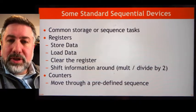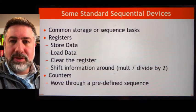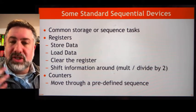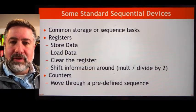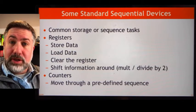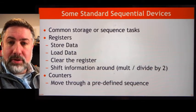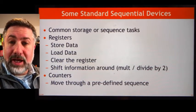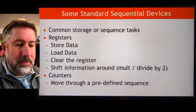A register is the first device we'll build. The idea is to store and manipulate a collection of individual bits treated together like a word — a collection of bits representing a number or piece of information. The size of these registers dictates the size of the data path of the computer. A 32-bit computer has 32-bit chunks of information passed around and stored in 32-bit registers. We're going to build a register that can store and also shift, which allows us to move information in the register up or down by one bit.